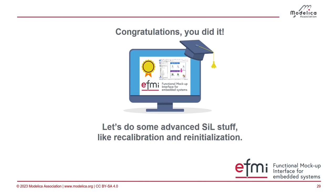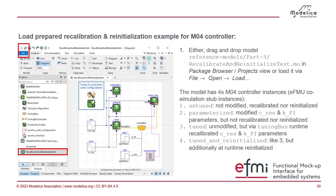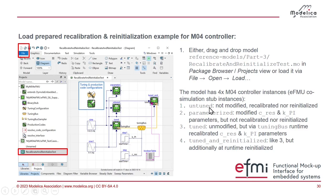For recalibration and re-initialization, you will find a prepared model in the software bundle — in the directory reference models part three, recalibration and re-initialization test. Please open that model. In this model you will see four instances of our controller — the same controller instantiated four times. The untuned instance is completely untuned, just drag and drop.